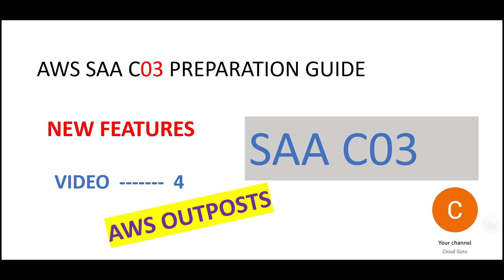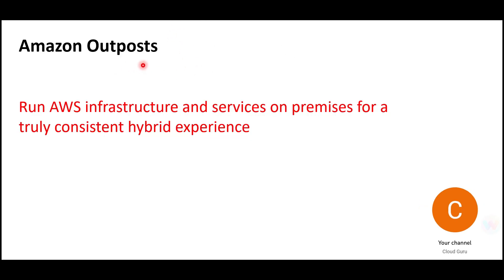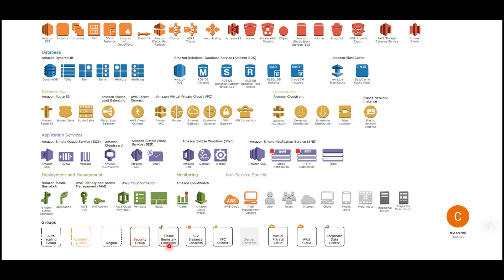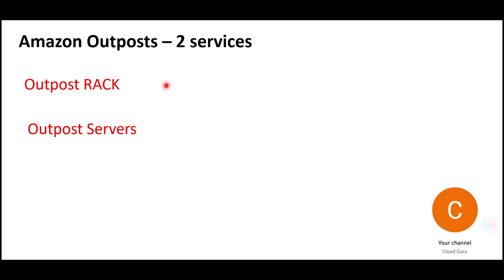Welcome to this part where we are looking at AWS Outpost, a new feature included in the SAA-C03 certification course. What is Outpost? In today's world, people say go to AWS and create your S3 buckets, EC2 instances, and so on. But what if you have a stringent requirement where you have to take everything on-premises? In that case, you have AWS Outpost. There are two services: Outpost Rack and Outpost Servers.